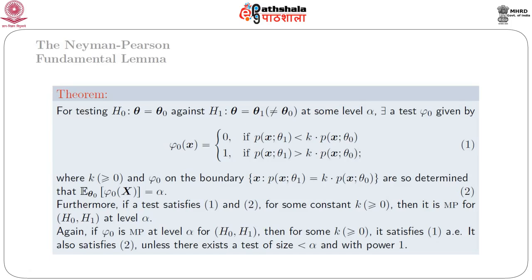We state a theorem called the Neyman-Pearson lemma, which is the fundamental lemma of Neyman-Pearson. For testing theta equal to theta naught — where theta naught is a single-point set — against H1: theta equal to theta 1, also a single point, with theta 1 differing from theta naught. A test phi naught is given by: phi naught(x) equals 0 if p(x, theta_1) is less than k times p(x, theta_naught), and 1 if p(x, theta_1) is greater than k times p(x, theta_naught).